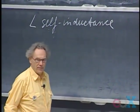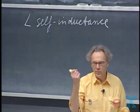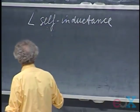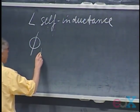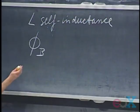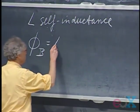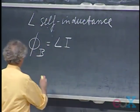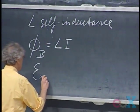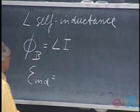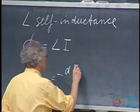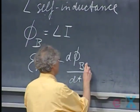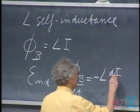The word 'self' speaks for itself — it's doing it to itself. The magnetic flux produced by a circuit is always proportional to the current. If you double the current, the magnetic flux doubles. So it is the proportionality constant that we call L, the self-inductance. Therefore, the induced EMF equals minus dΦ/dt — that is Faraday's law — and so that becomes minus L di/dt.